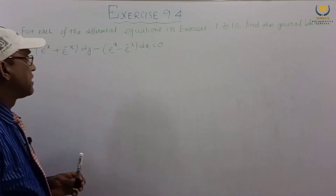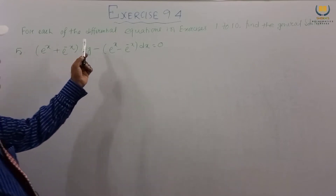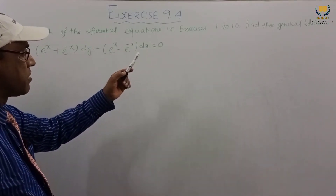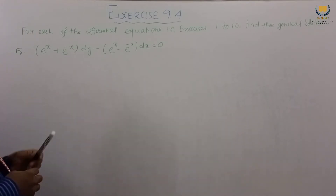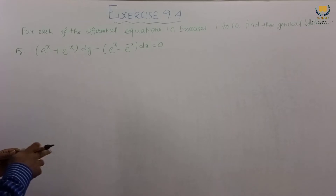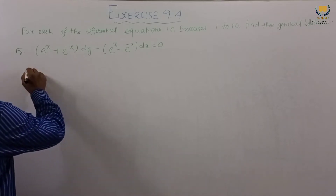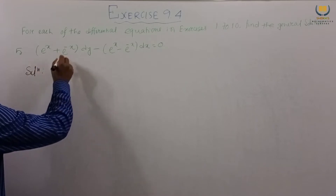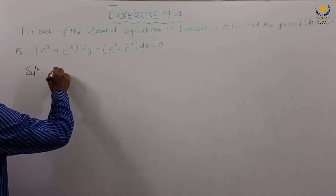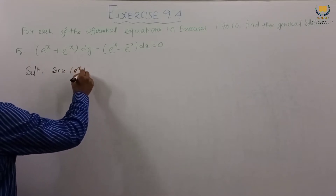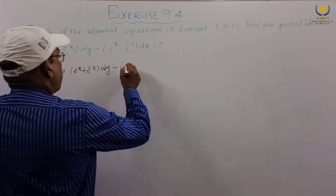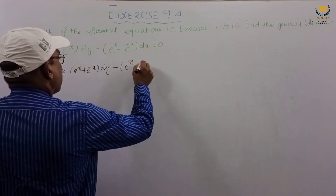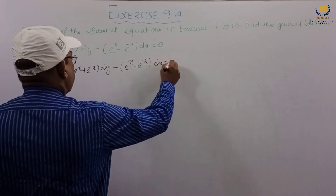For each of the differential equations in exercises 1 to 10, find the general solution. The problem given is: (e^x + e^-x)dy minus (e^x minus e^-x)dx equals 0. We are rewriting this as e^x plus e^-x dy, minus e^x minus e^-x dx equals 0.